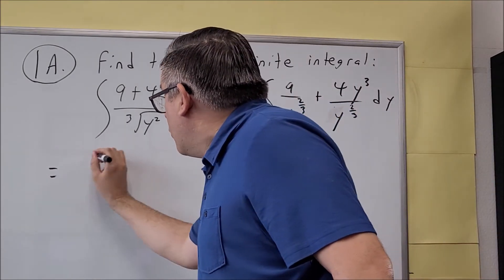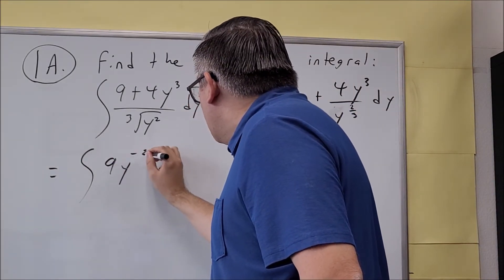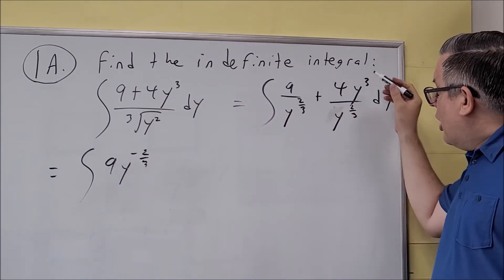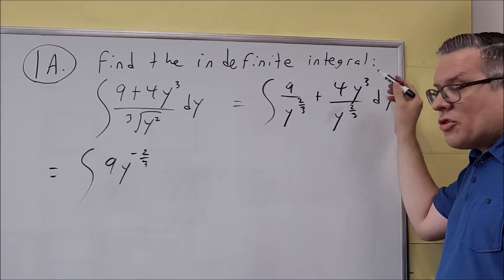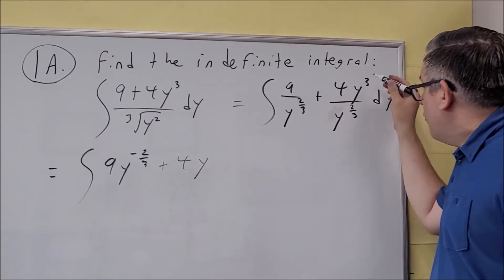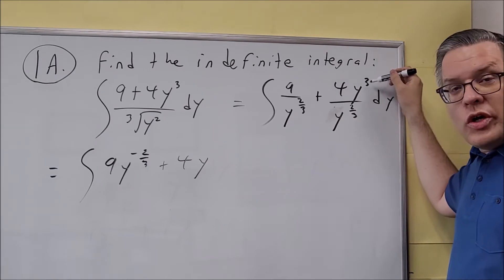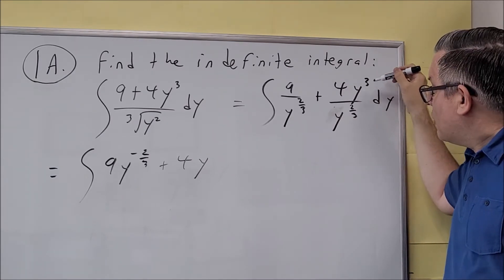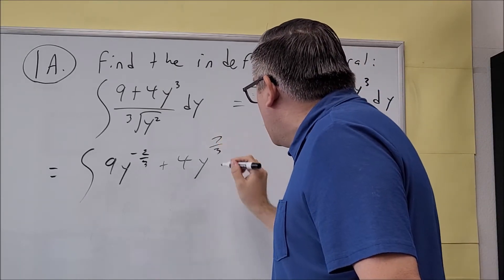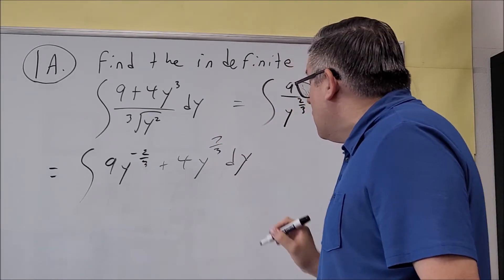In the next step, we're going to make that 9y to the negative 2/3 — we'll change all of these into powers. For this one, we have to subtract the exponents. We have plus 4y, and if we subtract the exponents, 3 can be written as 9/3, so 9/3 minus 2/3 is 7/3. So we have 4y to the 7/3, and then dy.